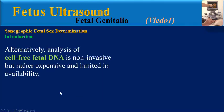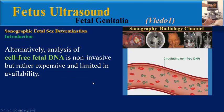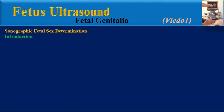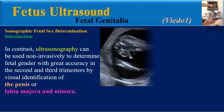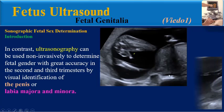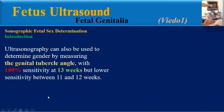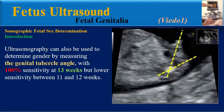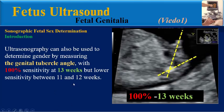Alternative analysis of cell-free DNA is non-invasive but rather expensive and limited in availability. In contrast, ultrasonography can be used non-invasively to determine fetal gender with great accuracy in the second and third trimester by visual identification of the penis or labia majora and minora. Ultrasonography can also determine gender by measuring the genital tubercle angle with 100% sensitivity at 13 weeks, but lower sensitivity between 11 and 12 weeks.